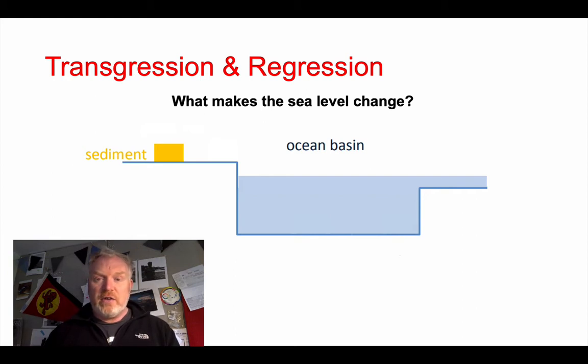And low-lying areas, then, can get submerged. So that melting of the ice would cause a marine transgression. Formation of ice would cause a marine regression.